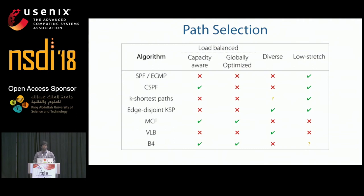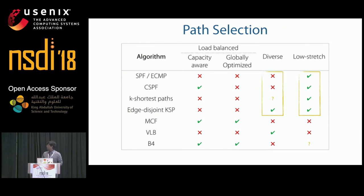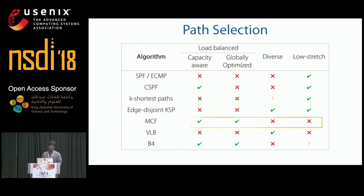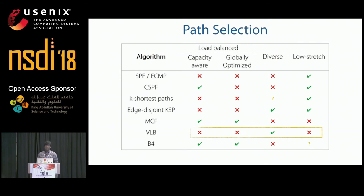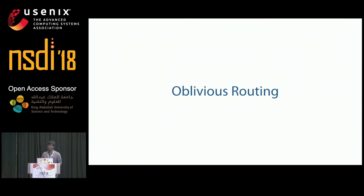Most commonly used path selection algorithms do not meet all criteria for good path selection. Shortest-path-based schemes such as ECMP, CSPF, and k-shortest paths provide low stretch but are not optimized for robustness or good load balancing. Switching to MCF gives good load balancing but often produces a brittle set of paths with high latency. People have therefore tried demand-oblivious schemes such as Valiant Load Balancing (VLB) to achieve good performance.